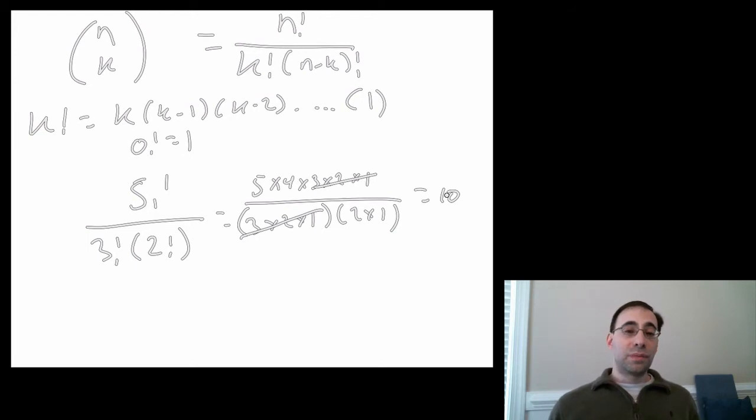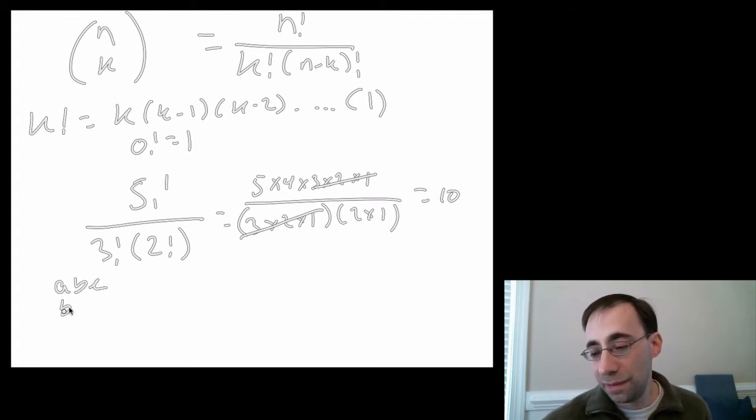However, sometimes we might care about the order. If we do, we use what's called a permutation. A permutation is the number of ways of drawing k things out of n things, taking into account the order. When you take into account the order, you discover that, for instance, ABE is different from BEA, and so on. The order actually matters.